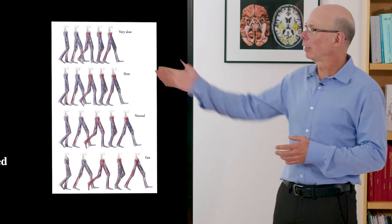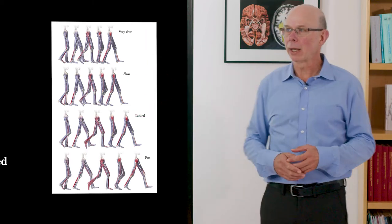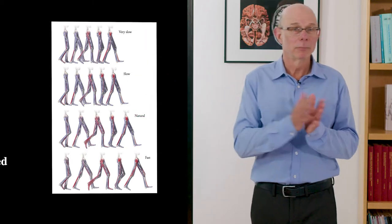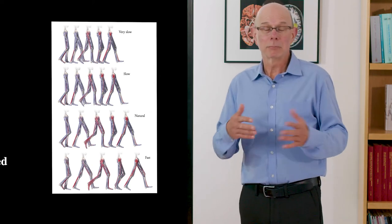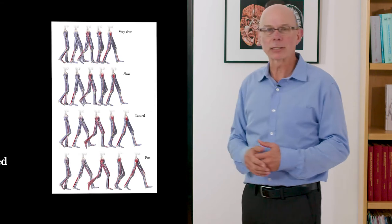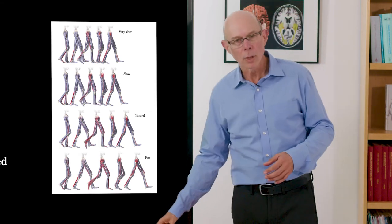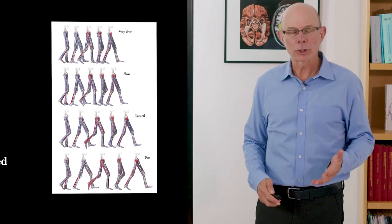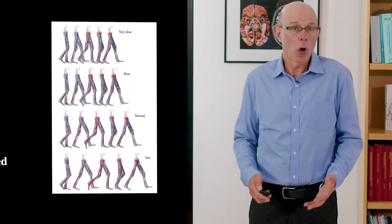What I'm showing here is simulations of walking at four different speeds: slow, just below self-selected, self-selected and fast walking. We care about muscle actions during various speeds because we walk at different speeds.